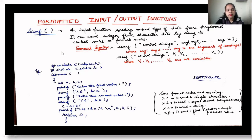Let us see a sample program. We have hash include iostream.h and hash include stdio.h, because scanf is in the stdio library so we must include that header file. Without stdio.h it will show an error. Then int main() starts the main program within curly brackets.